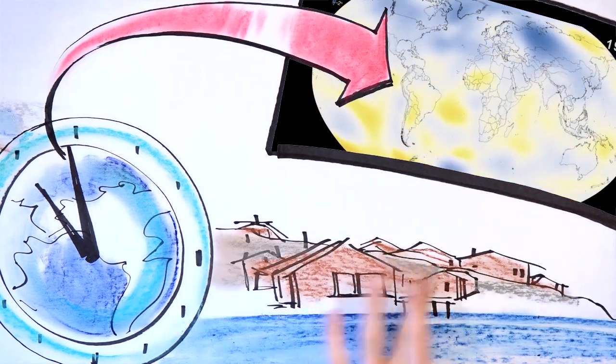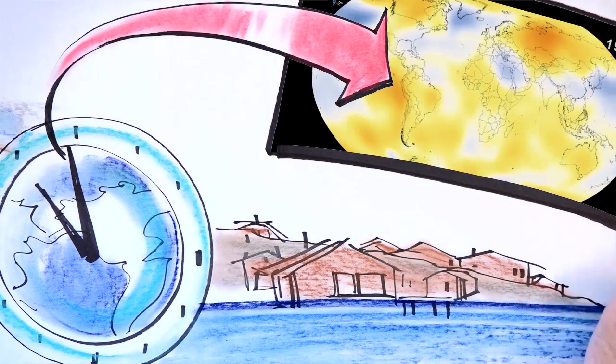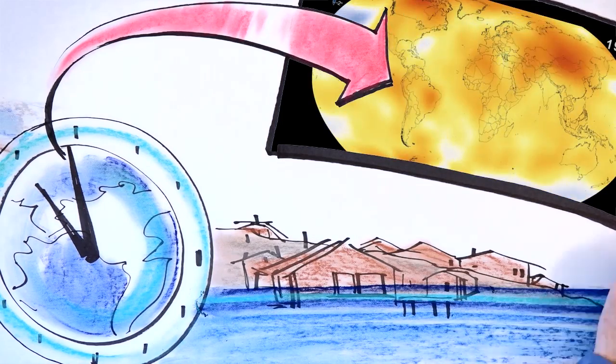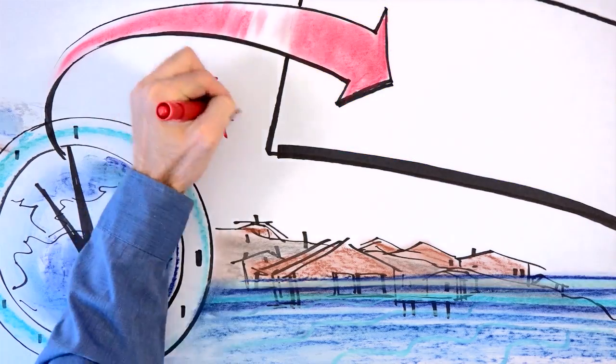Runoff from all that melting is greatly accelerating sea level rise. Worldwide, seas have already risen eight inches and could rise another four feet by the end of the century.